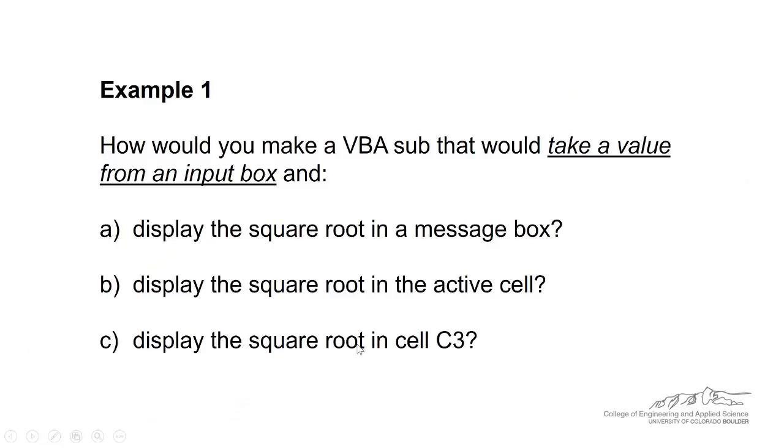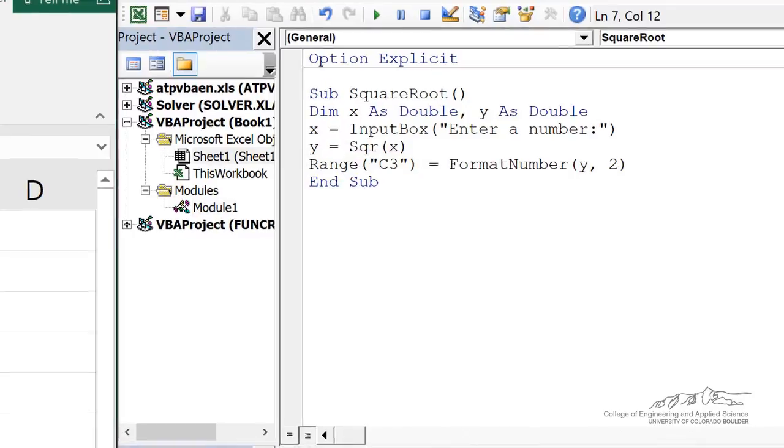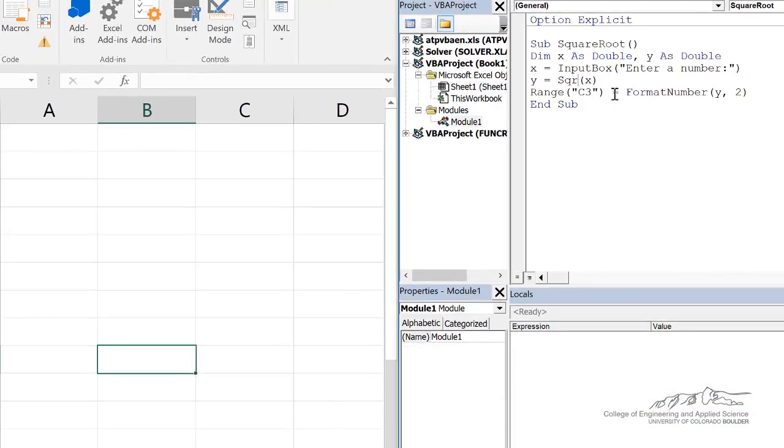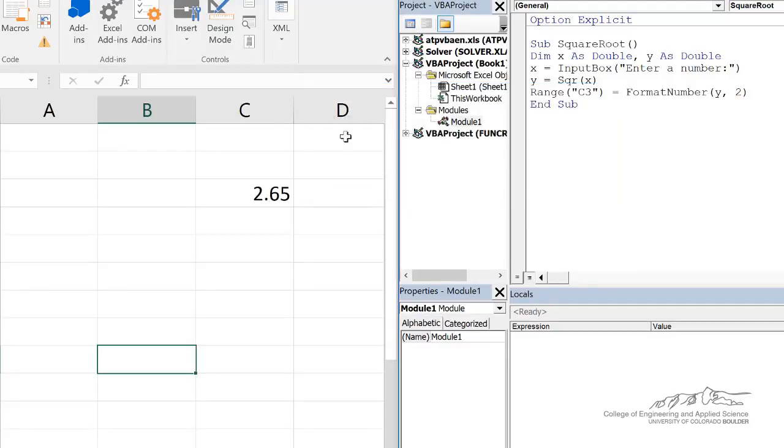And finally, if we wanted to display the square root in cell C3, regardless of where the active cell is when we start this subroutine, it will always be placed in cell C3. We can just make a few modifications. We replace active cell with just range C3. So regardless of where the active cell is when we begin this sub, it will place the answer into cell C3.